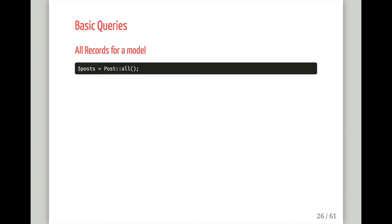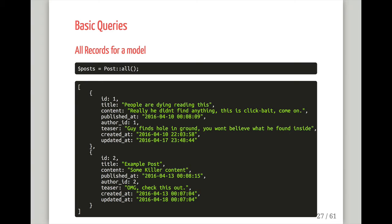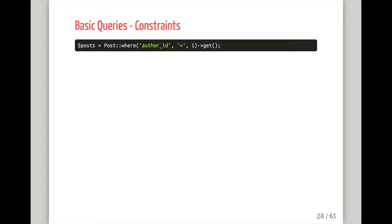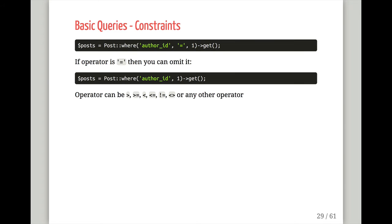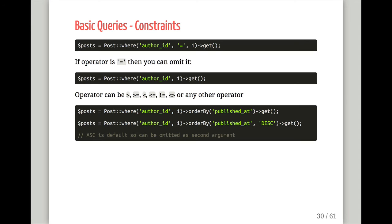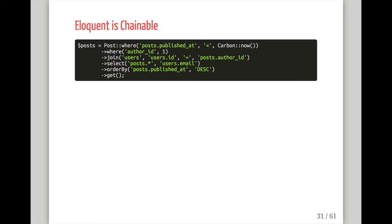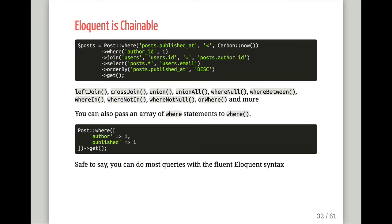Let's do some basic queries. Post::all() returns all records. For queries with constraints, you use Post::where('author_id', 1). You can actually omit 'equals' if it is equals, and use other operators for different query types. You can orderBy — the default is ascending, pass 'descending' as a second parameter. It's chainable, giving a very fluent syntax for writing out your Eloquent calls.